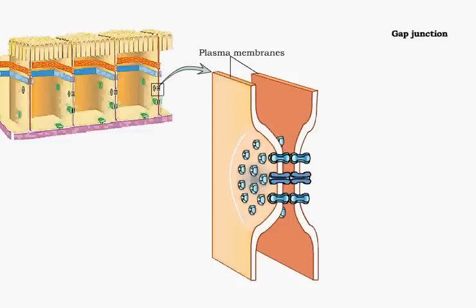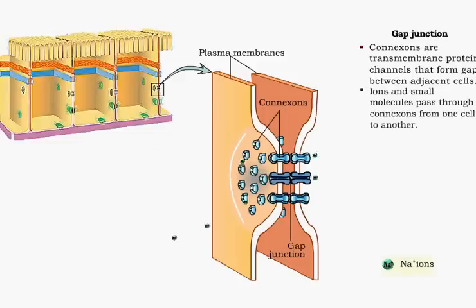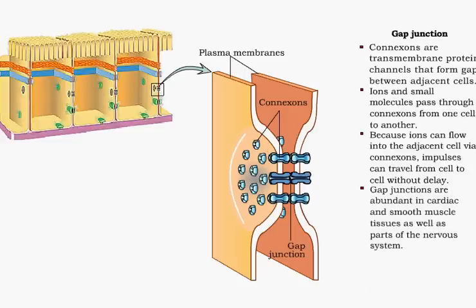The gap junction is an open communication channel. Transmembrane proteins called connexons join together to create tiny tunnels that form gaps between the adjacent membranes. Gap junctions allow ions and other small molecules to pass freely from one cell to another, and also allow electrical impulses to pass rapidly between cells. Gap junctions are particularly abundant in some types of muscle tissue.